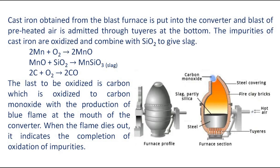Cast iron obtained from the blast furnace is put into the converter and a blast of preheated air is admitted through tuyeres at the bottom. The impurities of cast iron are oxidized and combine with silicon dioxide to give slag. The last to be oxidized is carbon, which is oxidized to carbon monoxide with the production of a blue flame at the mouth of the converter.